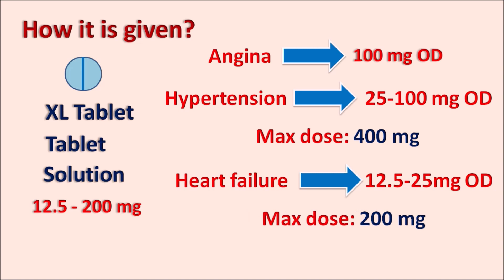For heart failure, the dose is reduced: the initial dose is 12.5 to 25 mg once daily with a maximum of 200 mg per day. Metoprolol is an important cardioselective beta blocker useful in various cardiovascular disorders including angina, heart failure, cardiac arrhythmias, hypertension, and prophylactically for myocardial infarction. It is a selective beta-1 antagonist that reduces rate and force of cardiac contraction, cardiac output, cardiac work, and cardiac oxygen consumption, collectively increasing cardiac efficiency.